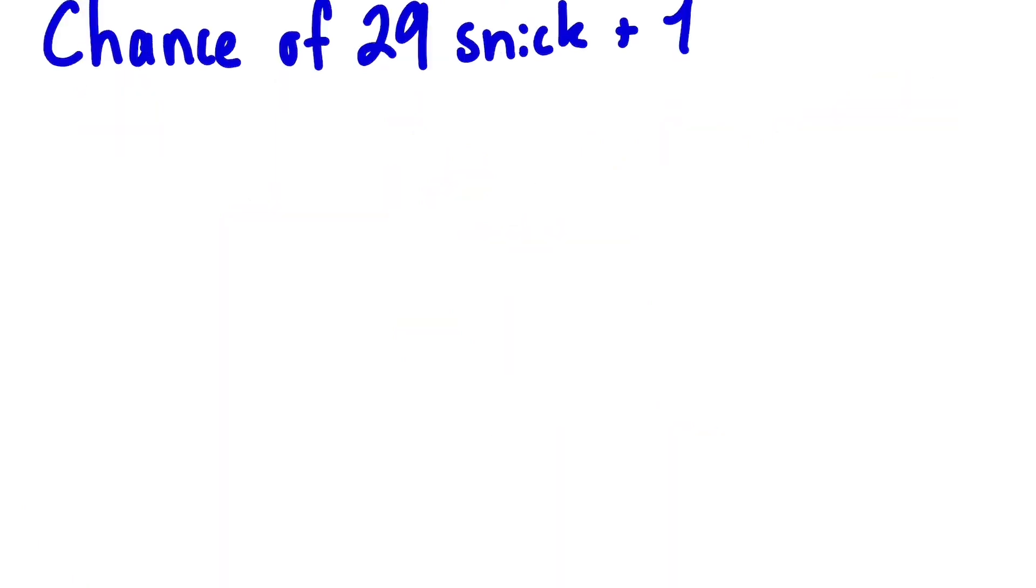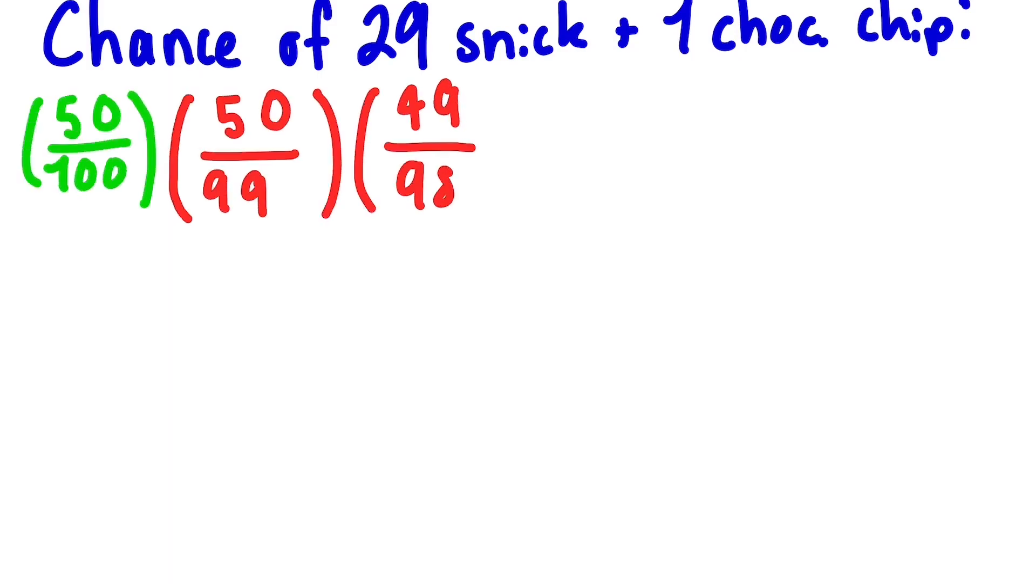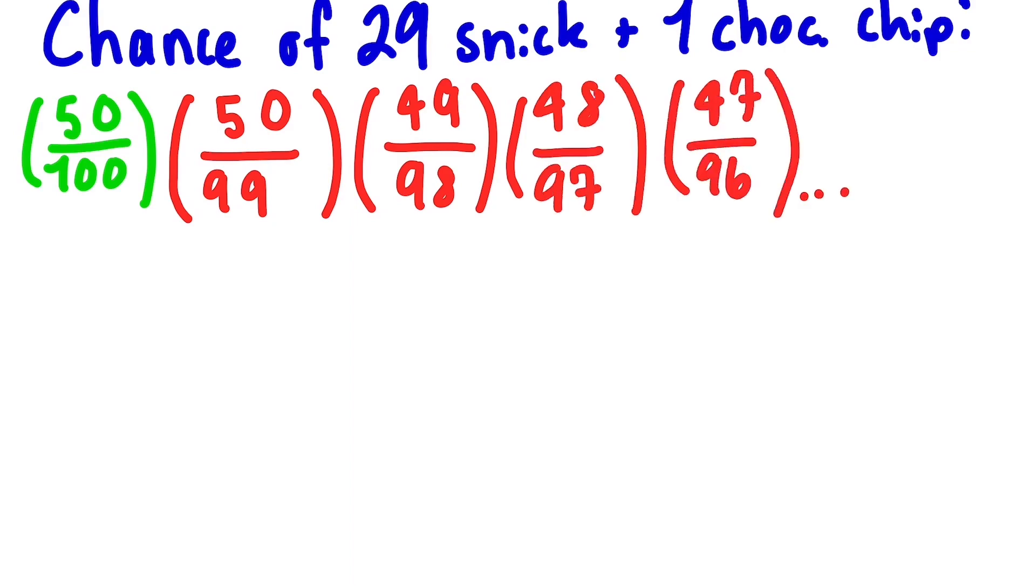Of course, this is possible, but if we really had 50 of each kind, this would be really unlikely. In fact, the chance of getting 29 snickerdoodle and 1 chocolate chip cookies in this situation is only 0.00000029%.